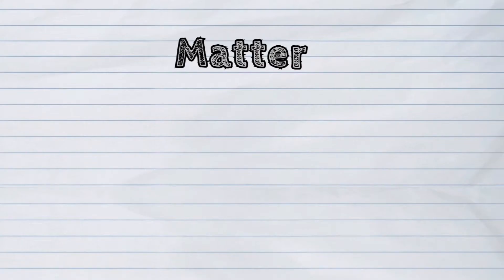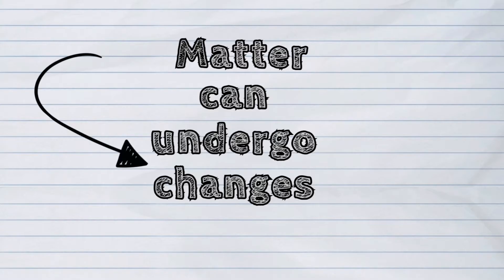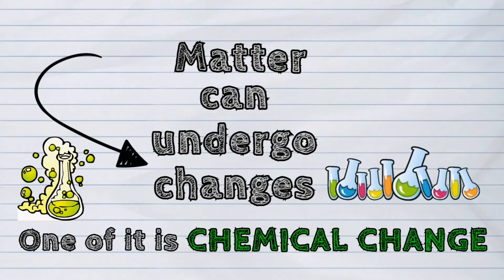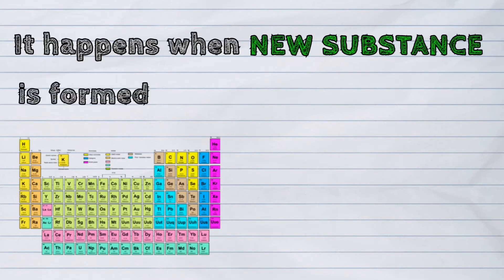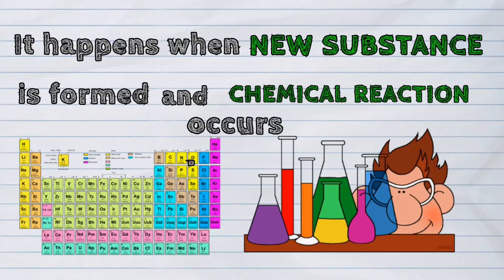Matter can undergo changes. One of it is the chemical change. It happens when new substance is formed and chemical reaction occurs.